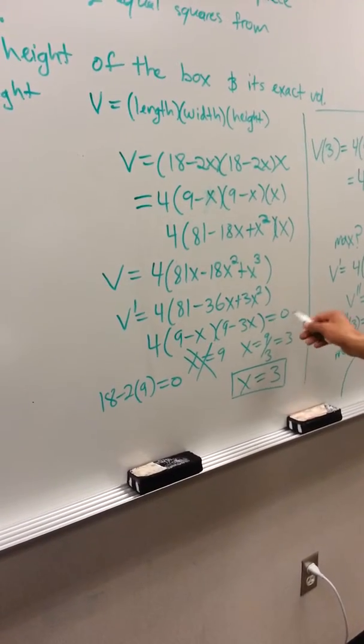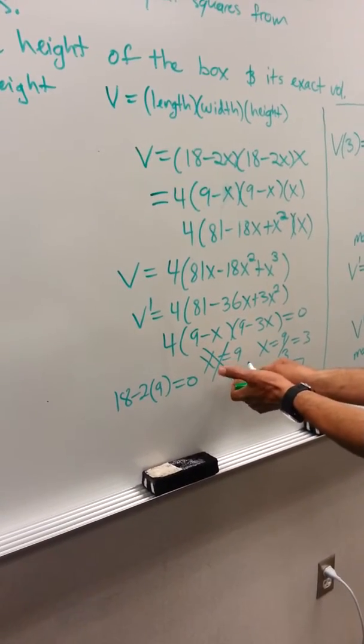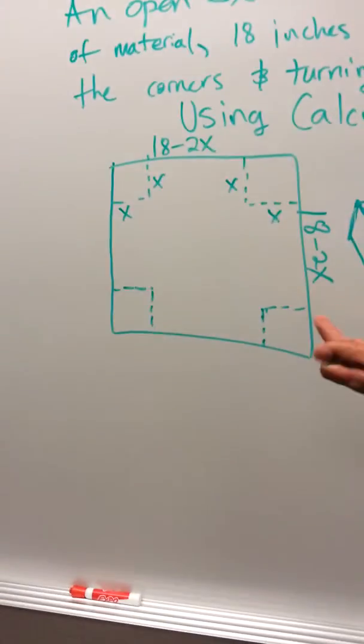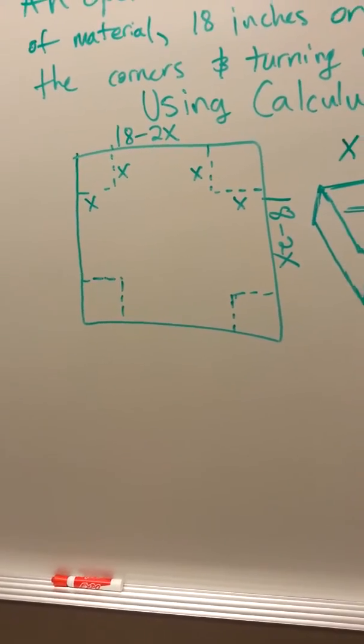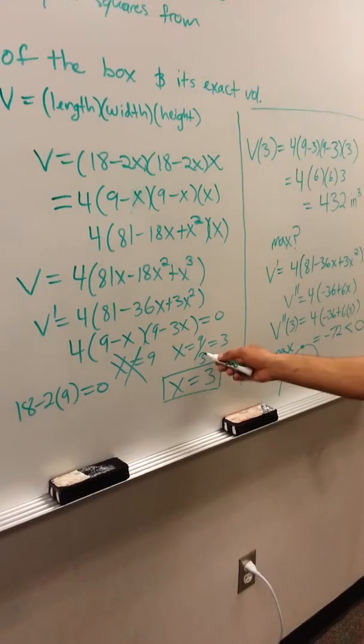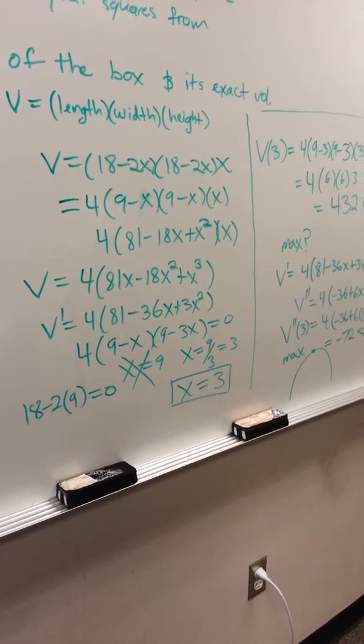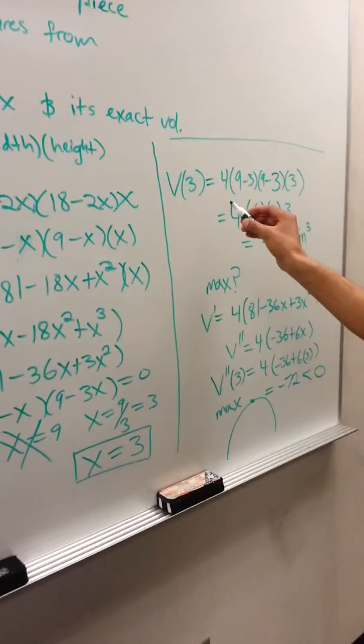Now we set the first derivative equal to 0. We get x = 9, which we cannot use because if I plug it back into 18 - 2x, I get 18 - 18 = 0, which means we can't use it. That leaves us with x = 9/3 = 3, which we can use.